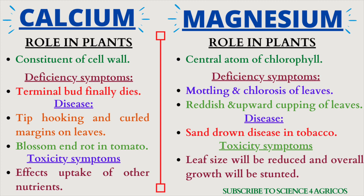Then magnesium — magnesium is the central atom of chlorophyll. Deficiency symptoms are mottling and chlorosis of leaves, and reddish upward curling of leaves. The disease due to magnesium deficiency is sand-drown disease in tobacco. Toxicity symptoms: leaf size will be reduced and overall growth will be stunted.